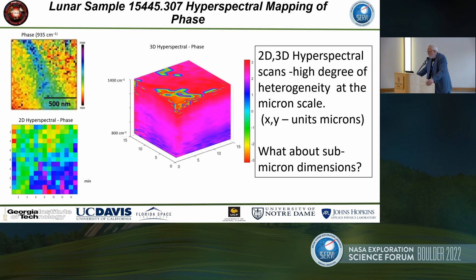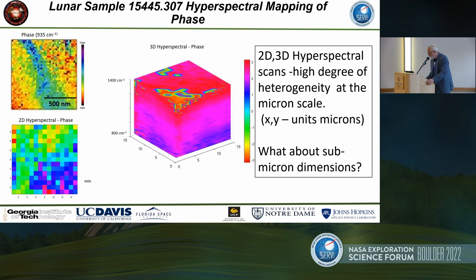This is a hyperspectral mapping in phase space at 935 wavenumbers — that's the 2D image shown on the top, the same frame you saw on the title slide. You can do this as a function of wavelength and construct a three-dimensional hyperspectral cube. The x and y axes on the cube are in microns. If you look at the heterogeneity visible on the top, it's frequency dependent, and you can zoom into that heterogeneous zone and map it out at submicron dimensions with optical resolution.